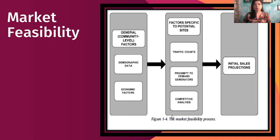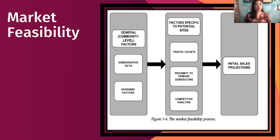This is the market feasibility process. You have the general community-level factors: demographic data and economic factors. For example, today we are in the middle of the pandemic, so what are the limitations? Factors specific to potential size, traffic factors, accounts — you will also know based on the number who replied to the survey.